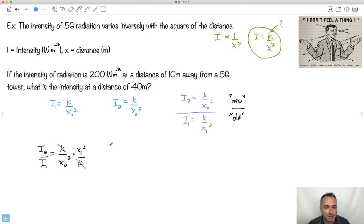So new over old. Let's see if we can do this. What happens when you divide a fraction by a fraction? You have to multiply by the reciprocal. So you flip this one and multiply it. So I have i2 over i1. This k over x1 squared gets flipped, so it becomes x1 squared over k.